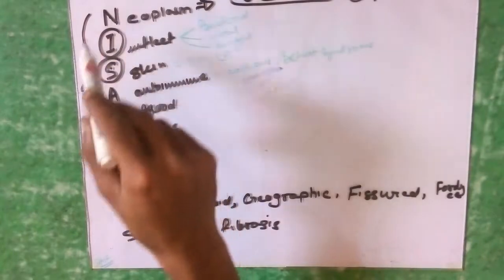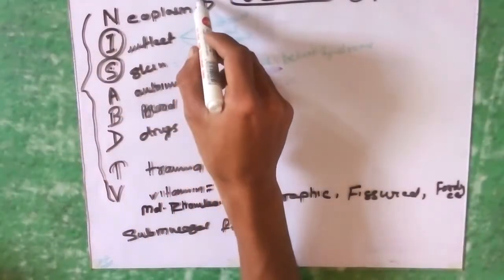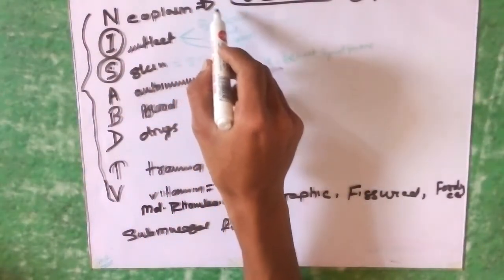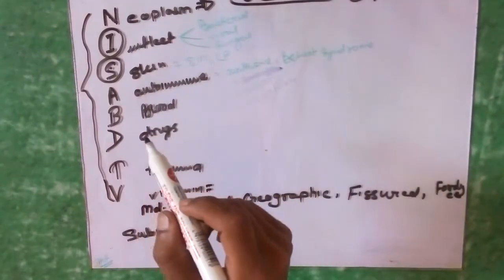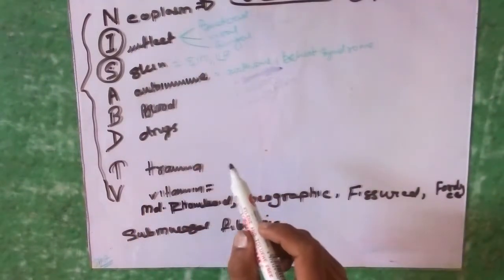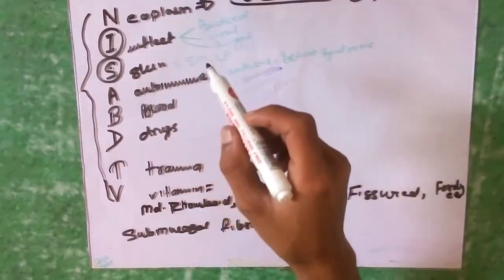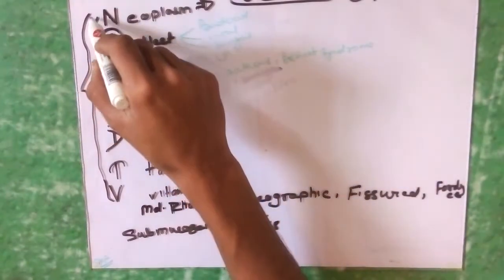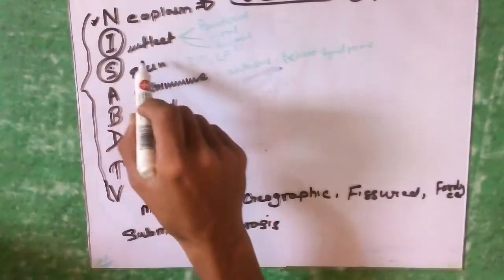For neoplasm, we know that all oral cavity premalignant or malignant lesions can cause ulcer of the oral cavity. We have discussed this earlier, so we don't need to repeat it.